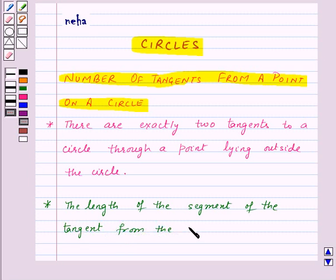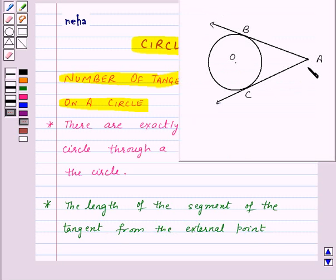From the external point, which is A in our case, and the point of contact with the circle.